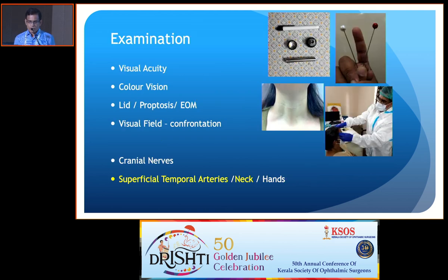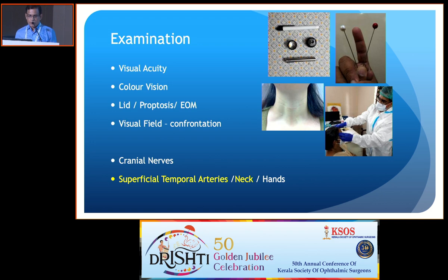Importantly, you should check the visual function and optic nerve function tests — acuity, colour vision — and look for other features including any lid involvement, extraocular motility involvement, and also any scars on the neck suggesting a history of thyroid surgery. Look for other cranial nerve involvement, as that will probably indicate a cavernous sinus or orbital apex lesion.